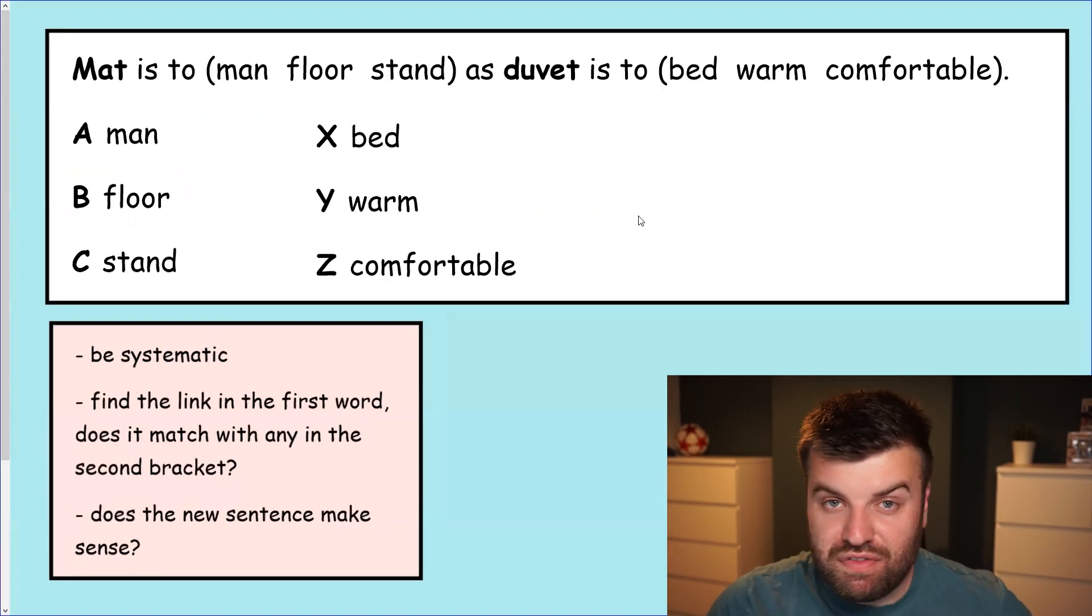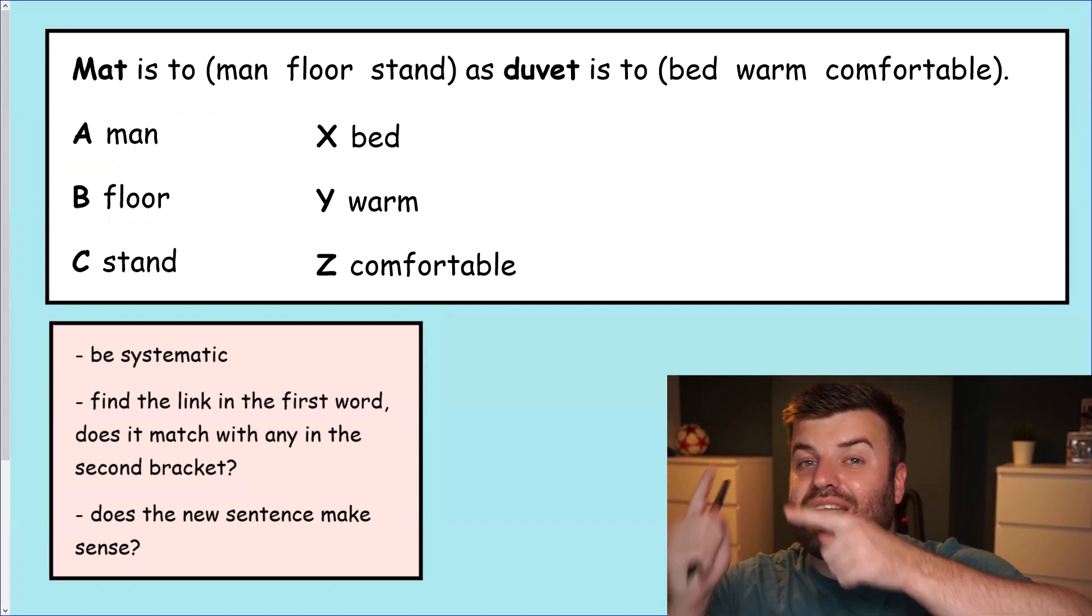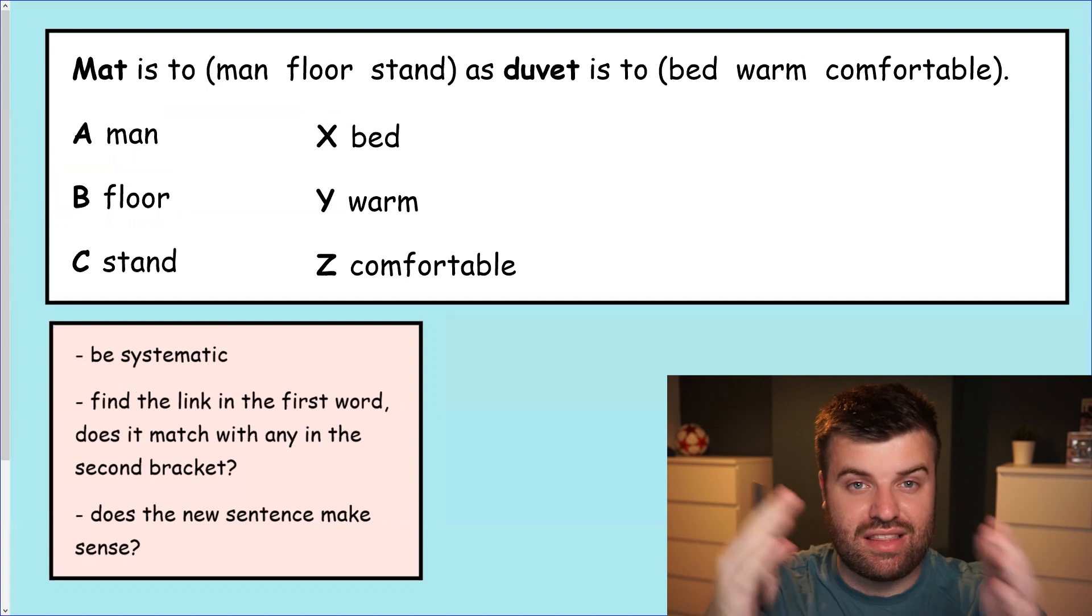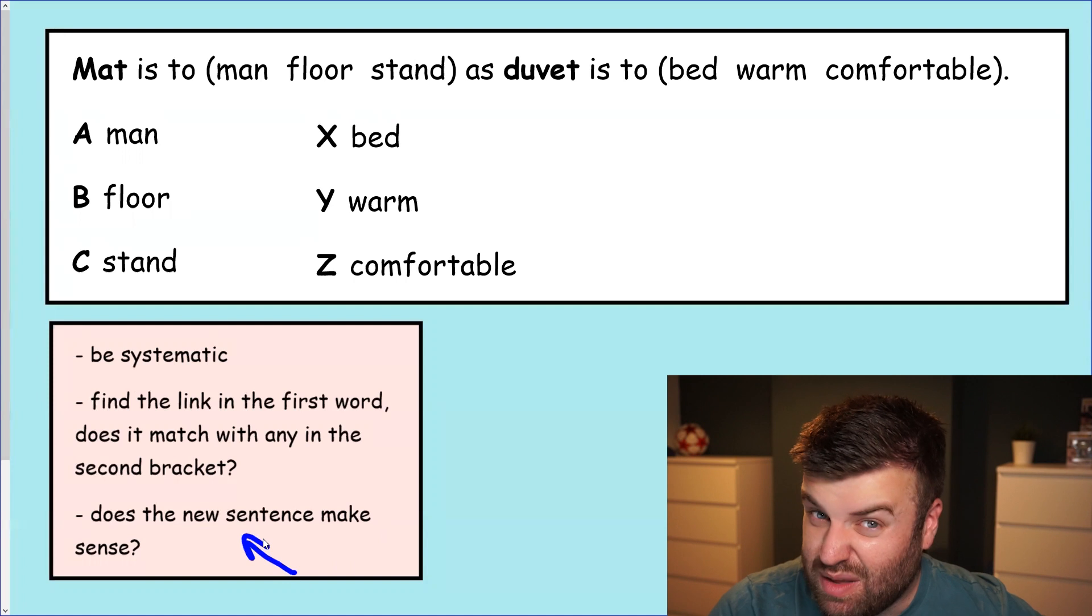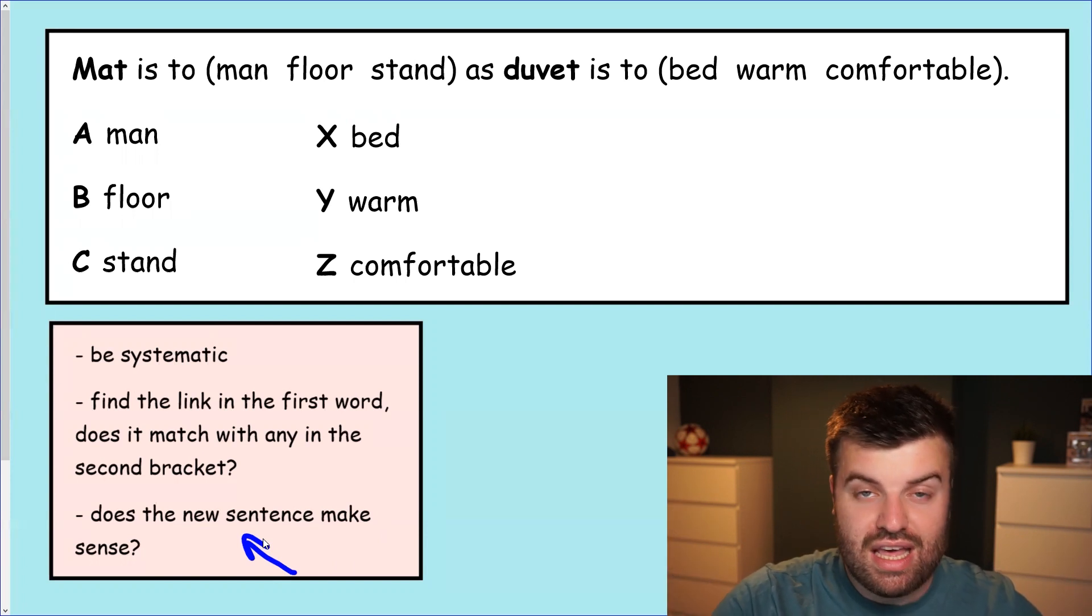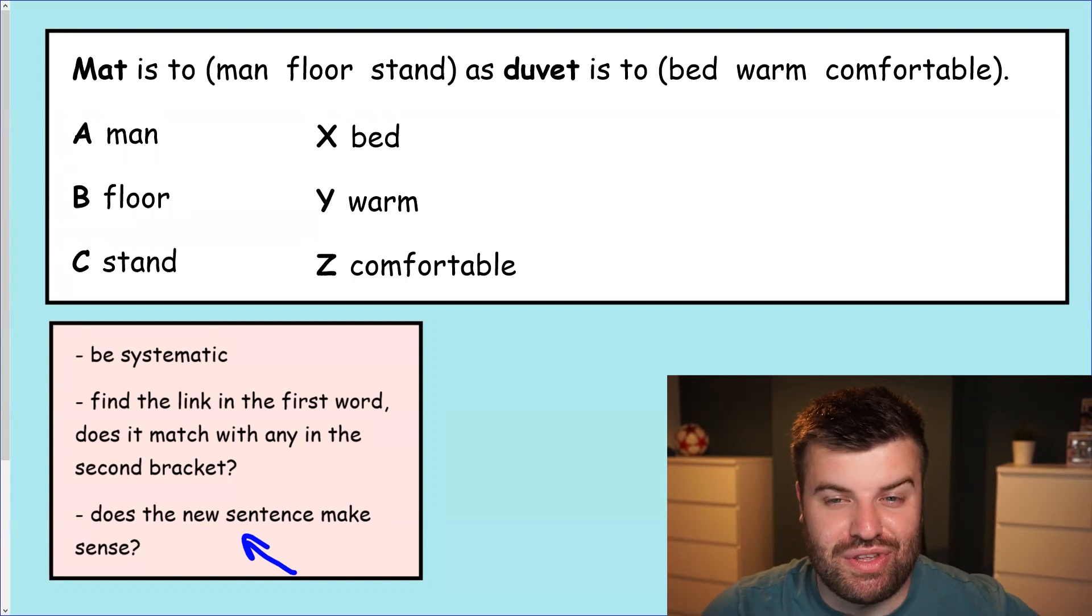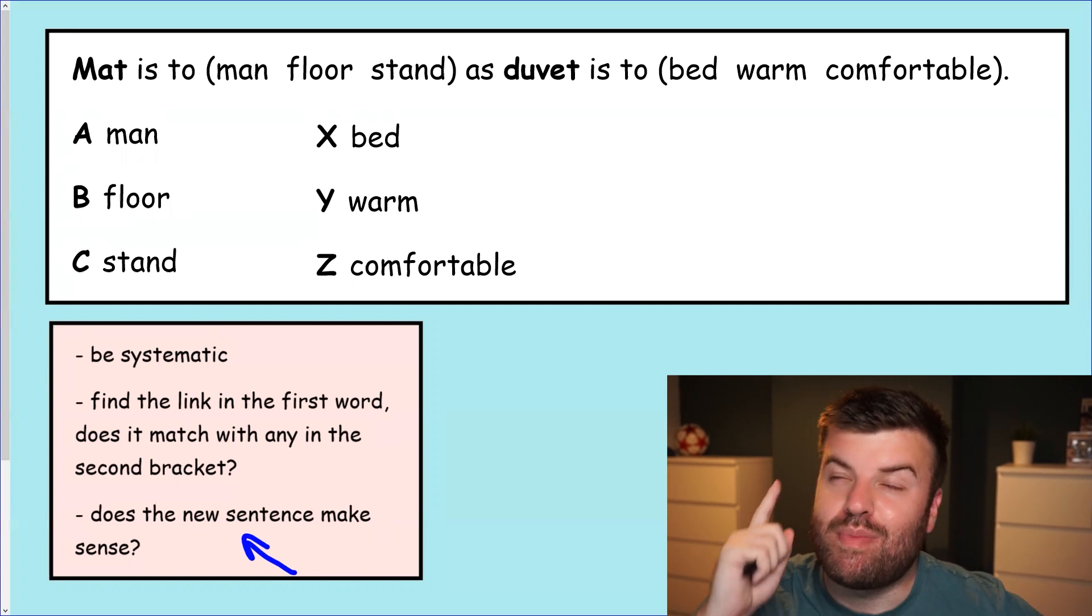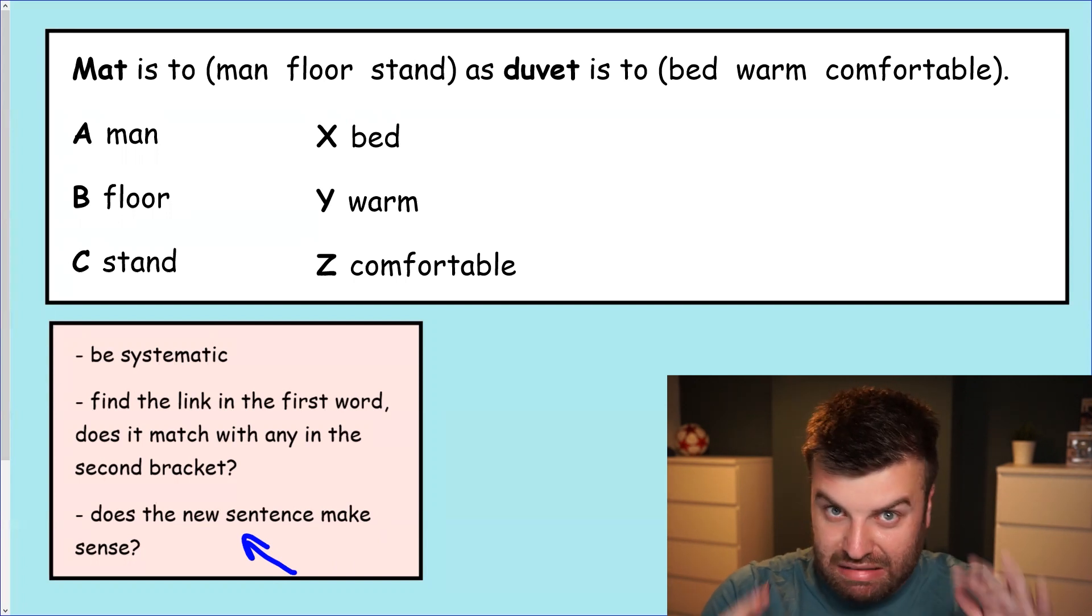So guys this one is for you. It's the final question. All I want you to remember is the hints and tips in that box down there. Be systematic. Does the link in the first bracket go in the same way for the second bracket? Is that link the same for both halves of this sentence? Final tip at the bottom. Just make sure that that new sentence makes sense. So one on the board. Mat is to what as duvet is to what. See if you can find a link. See if you can be systematic. See if you can get an answer. And do let us know if you have found it. Thank you guys for watching and we will be back tomorrow for another daily video. Even if this one was a little bit late. Sorry guys. See you tomorrow.